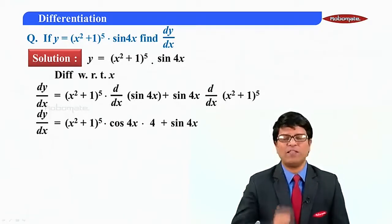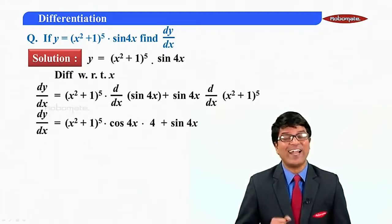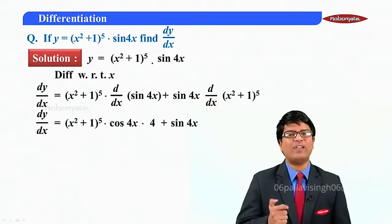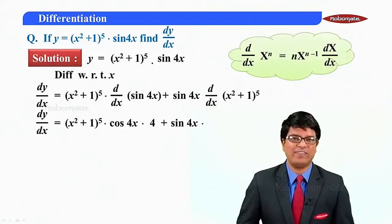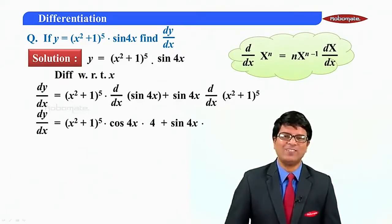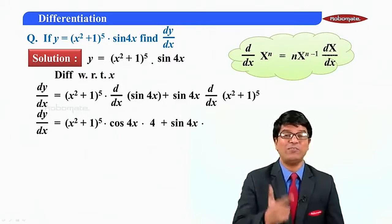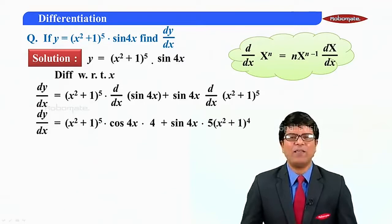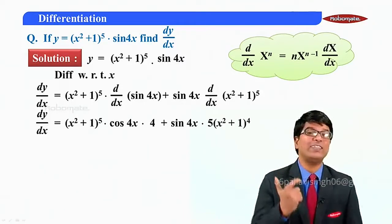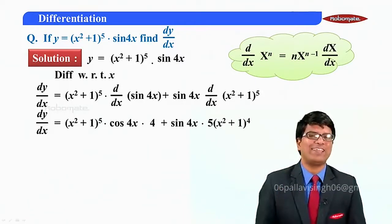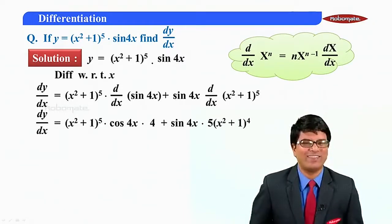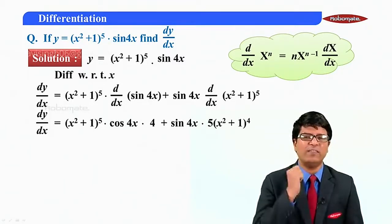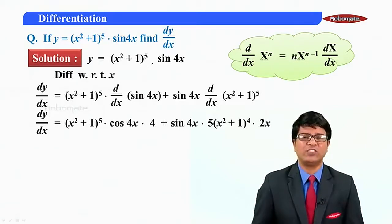Plus sin(4x) as it is. Now d/dx of (x² + 1)⁵ — is it a standard or a composite? It is composite, to the standard form xⁿ. The derivative of xⁿ is n·xⁿ⁻¹, so here it will be 5·(x² + 1)⁴. What is replacing big x? x² + 1. The derivative of x² is 2x, and the derivative of 1 is 0, so we get 2x.